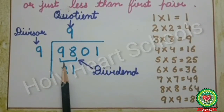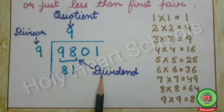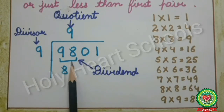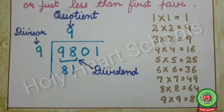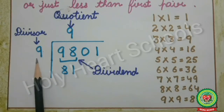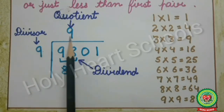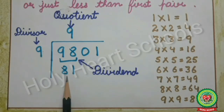Our first pair is 98, so 98 is our dividend. We have to find a number from the square table which is either equal to 98 or just less than 98. From the square table we find 81, which is just less than 98. Since 81 is the square of 9, we write 9 at the place of the divisor and also as the quotient, so that 9×9=81, which we write under our first pair.